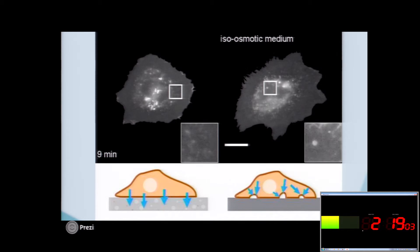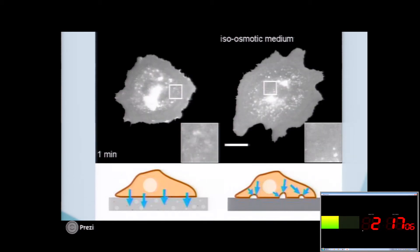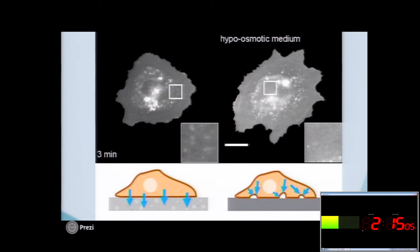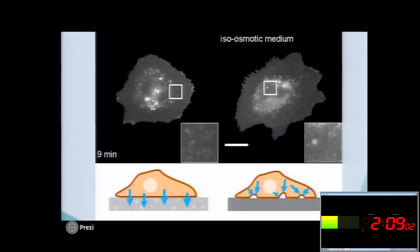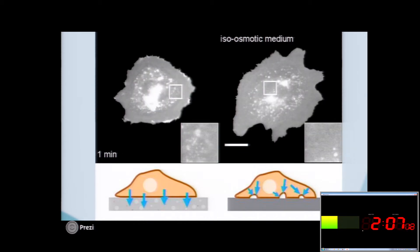Afterwards, we checked if the reservoirs and VLDs were occurring in an active or passive way using ATP depletion.